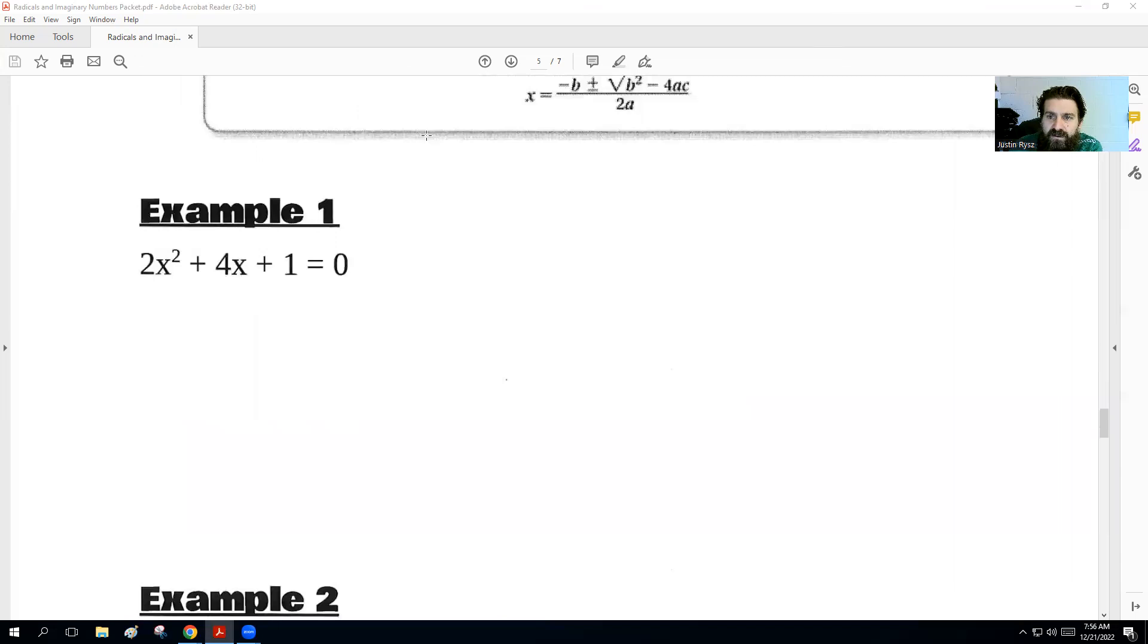In this first example here, we're going to type in the quadratic formula. So we got x equals negative. Our b number is 4 plus or minus the square root of b squared, so 4 squared minus 4 times a is 2 times c is 1 all over 2 and a is 2. Just plug the numbers in just like before. The next step was then to multiply. So negative times 4 is negative 4 plus or minus the square root of 4 times 4 is 16 minus 4 times 2 times 1 is 8 over 2 times 2 is 4.